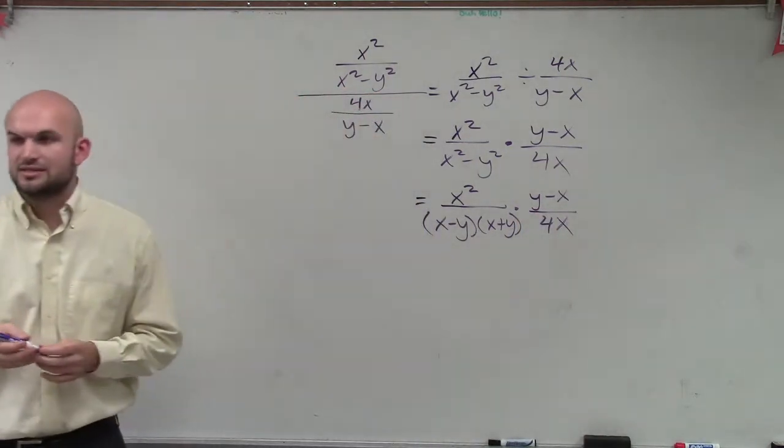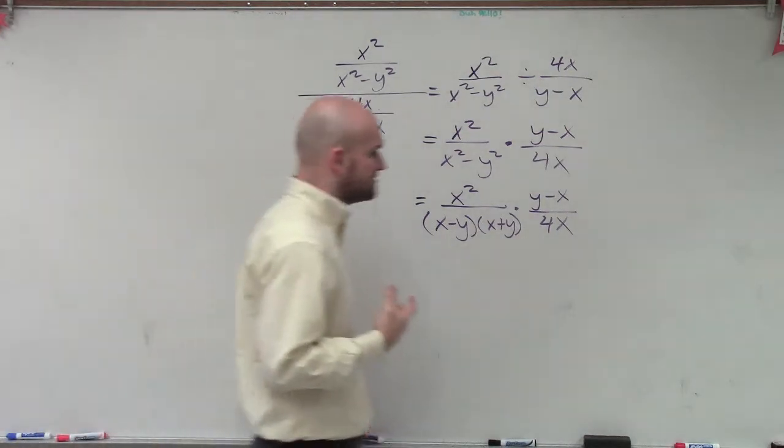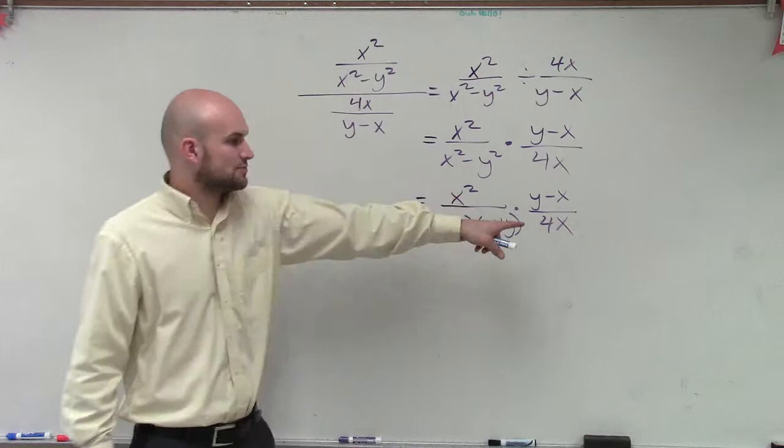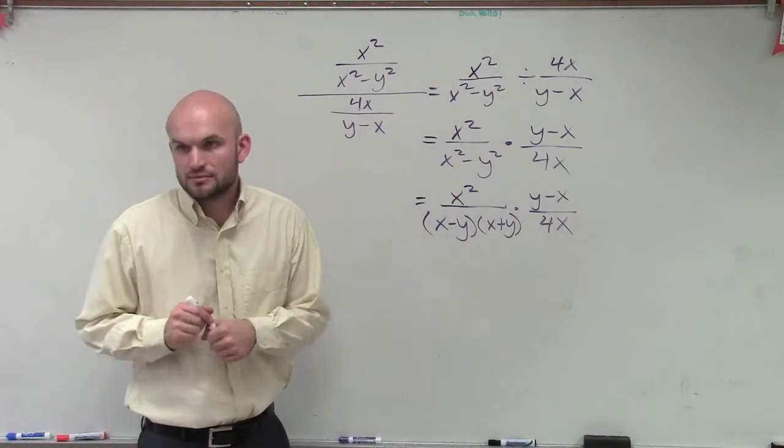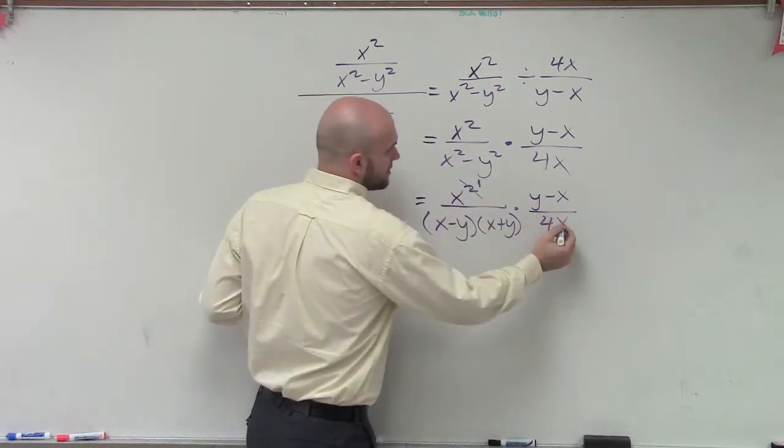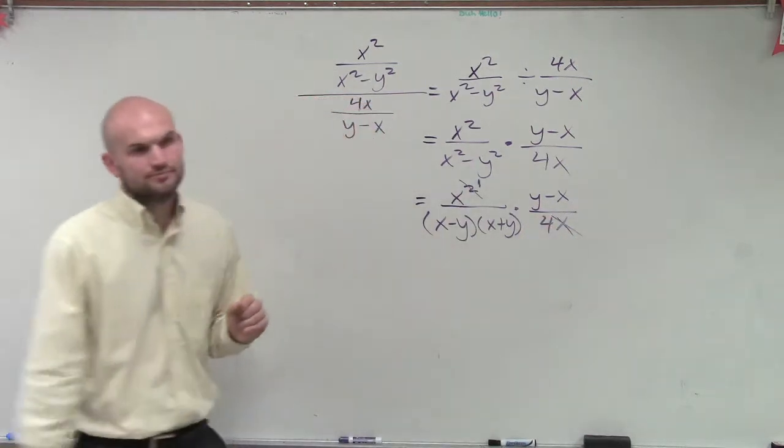So now let's go ahead and look at this and see what can we cancel, what can we divide out to 1. Alright? Well, we obviously know x squared can be divided by x, right? We can lose an x. Yes? So now this becomes x to the first power and the x's divide out to 1.